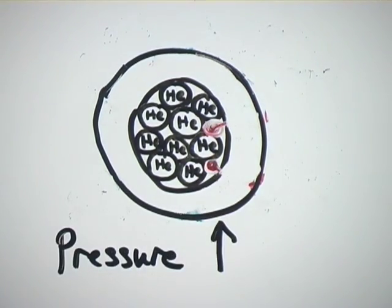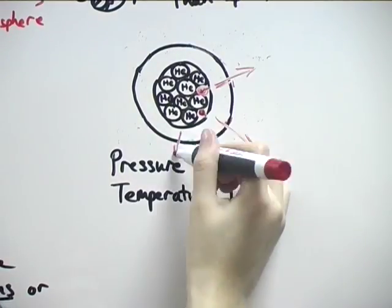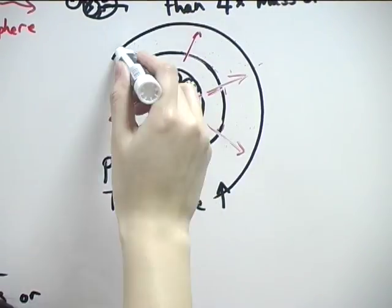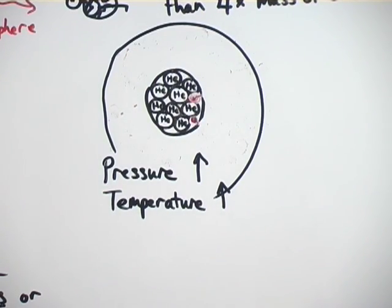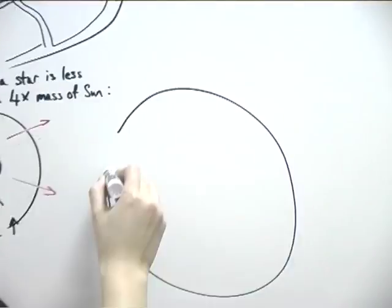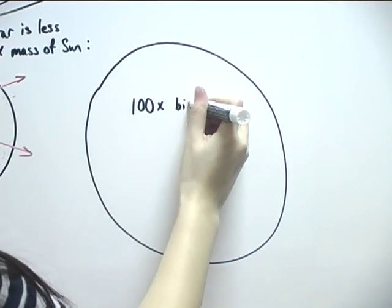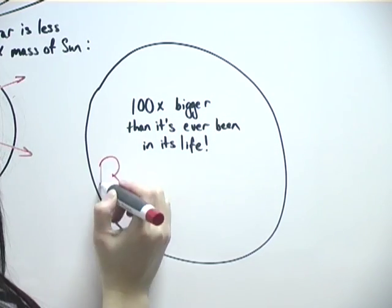As before, this makes the temperature and pressure increase. The temporary heat creates outward pressure again and counteracts the inward force of gravity, pushing the outer layers of the star outwards. The star ends up expanding much more than it did before, and it becomes about 100 times bigger than it has ever been in its life. It has turned into a red giant.